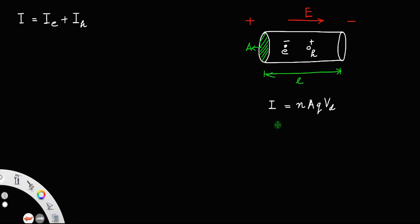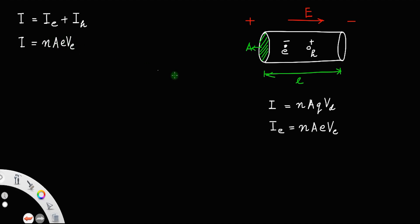So the current due to electrons, I_E, will be the number density of the electron into cross-sectional area A. The charge of the electron is e, and let the drift velocity of the electron be V_E. So I_E equals N times A times e times V_E, where N is the number density — the number of electrons per unit volume.